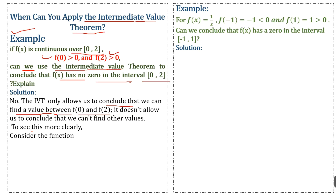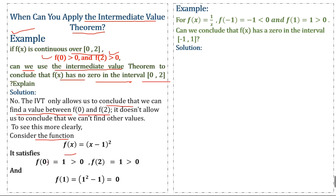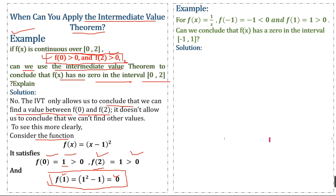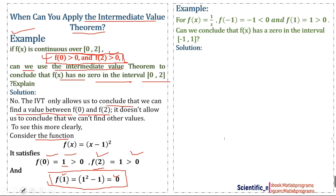It does not allow us to conclude that we can't find other values. To say this more clearly, consider f(x) = (x - 1)². We have f(0) = 1 > 0 and f(2) = 1 > 0, but f(1) = 0. So x = 1 is a zero inside the interval. It doesn't mean that just because the function is positive at both endpoints, there is no zero inside the interval.